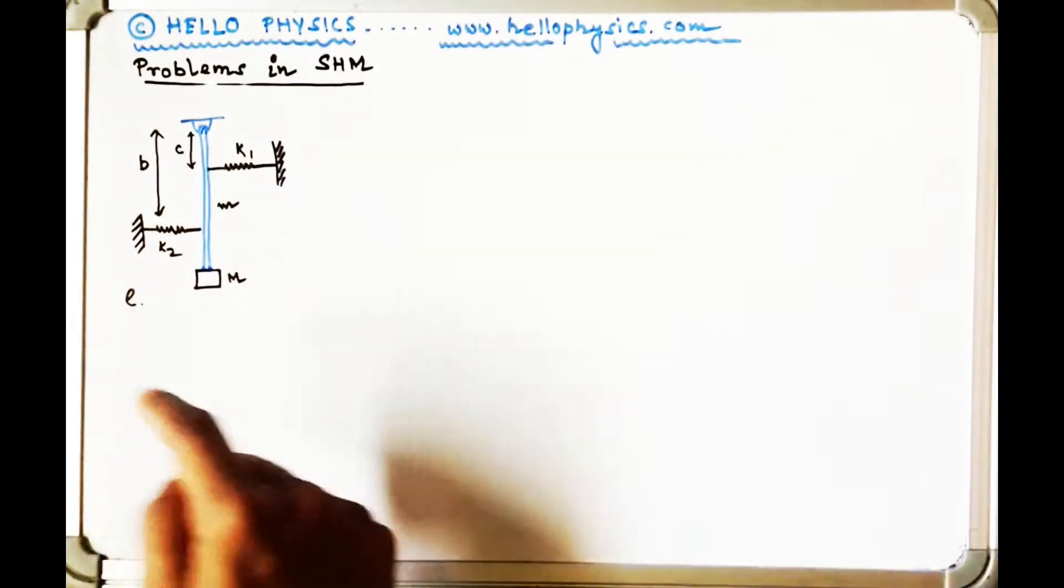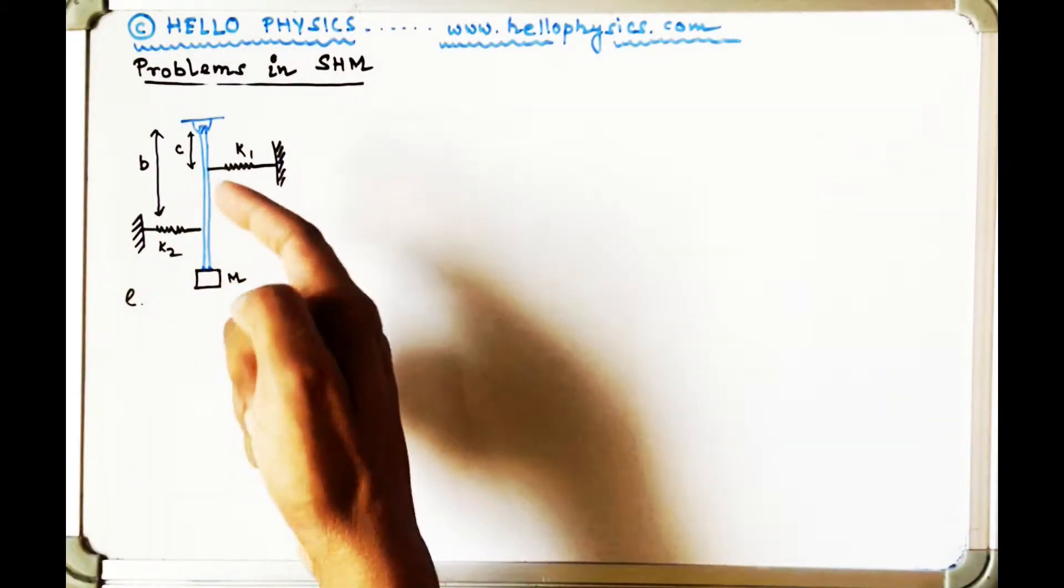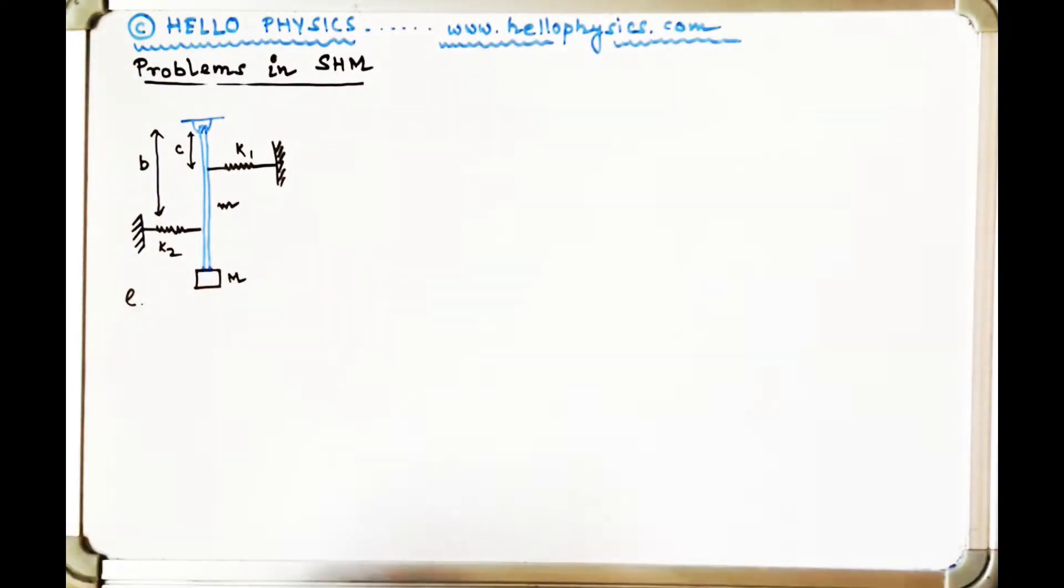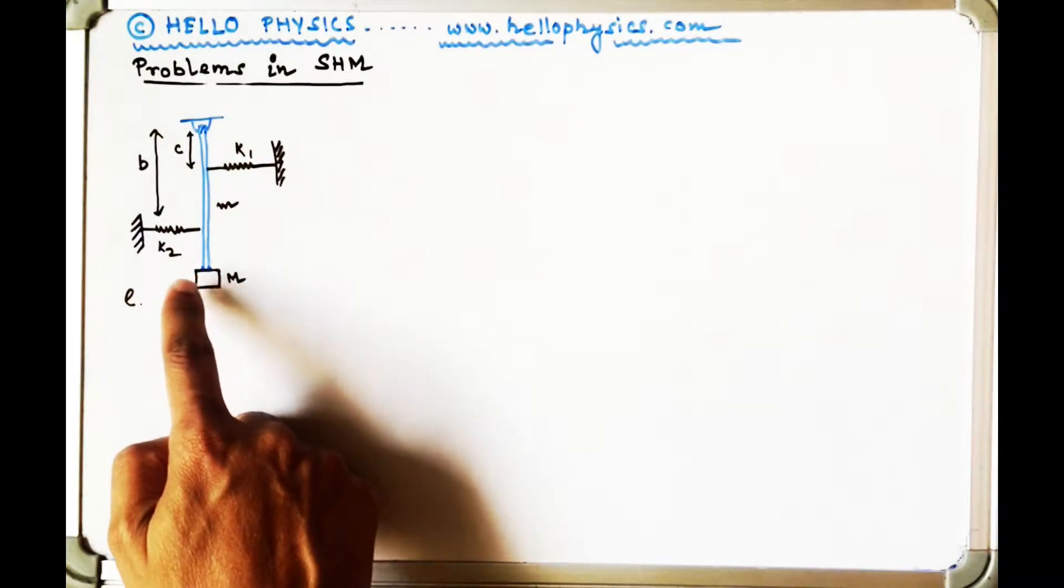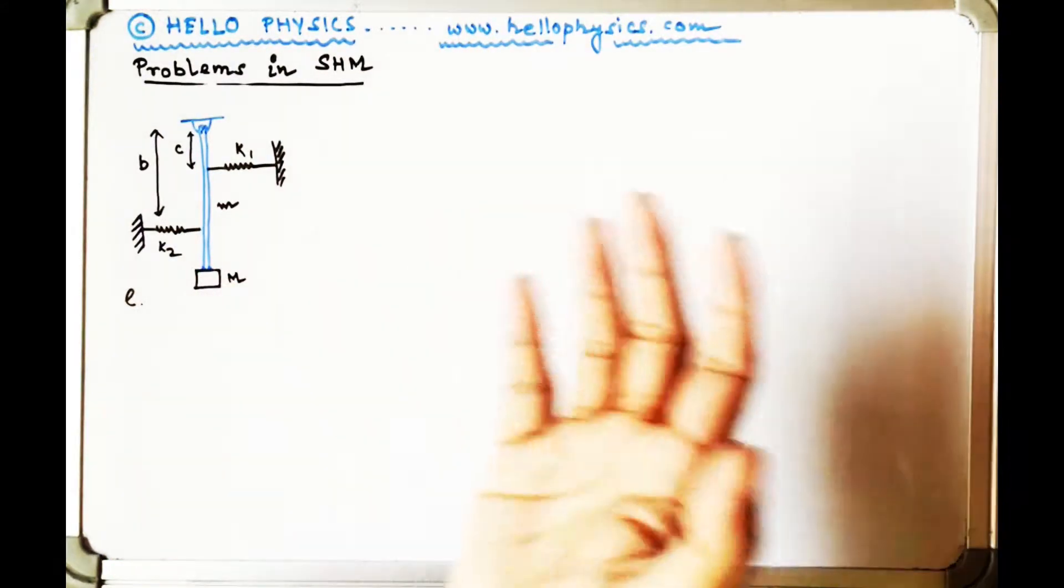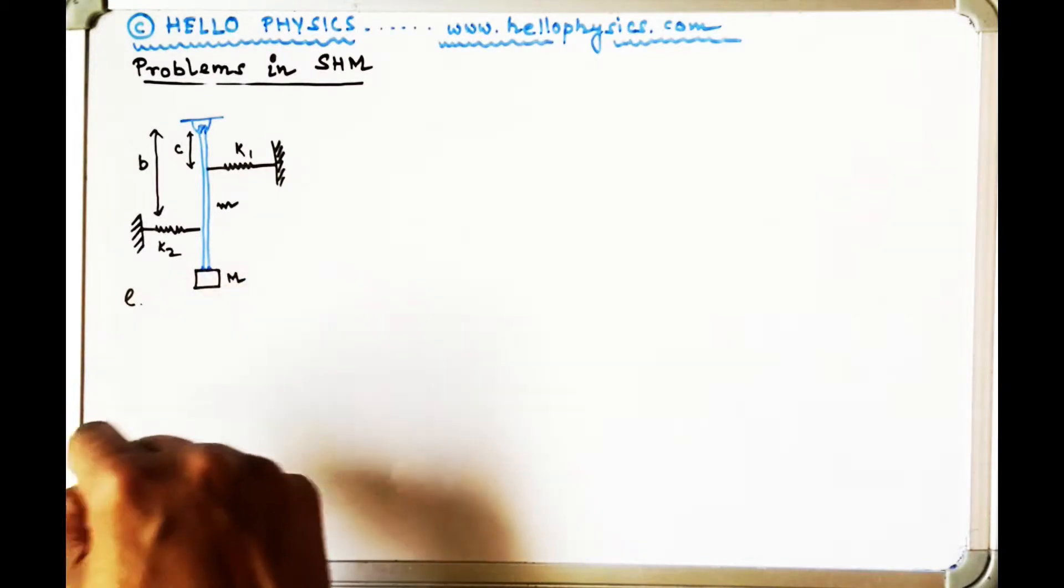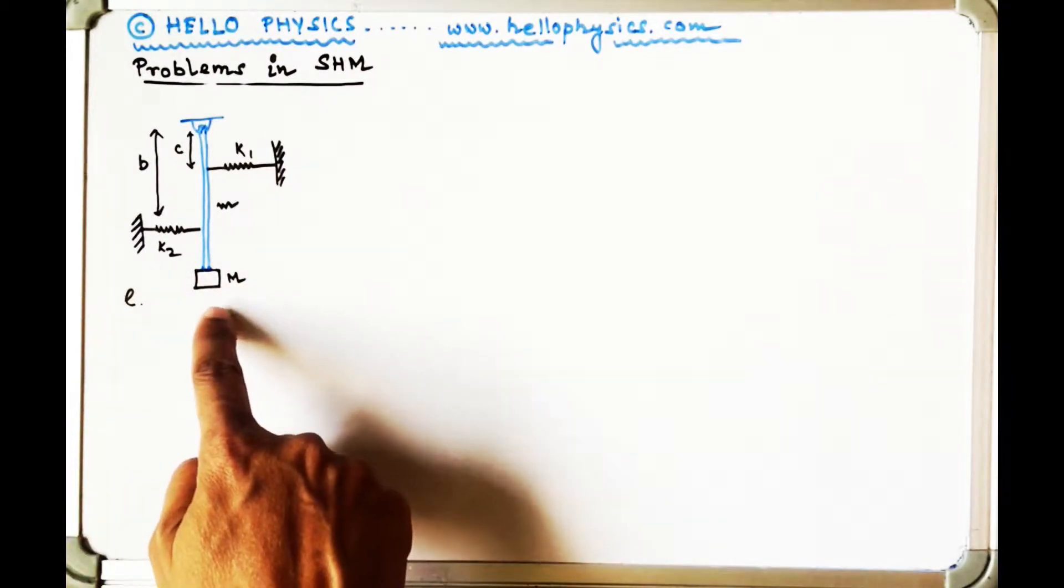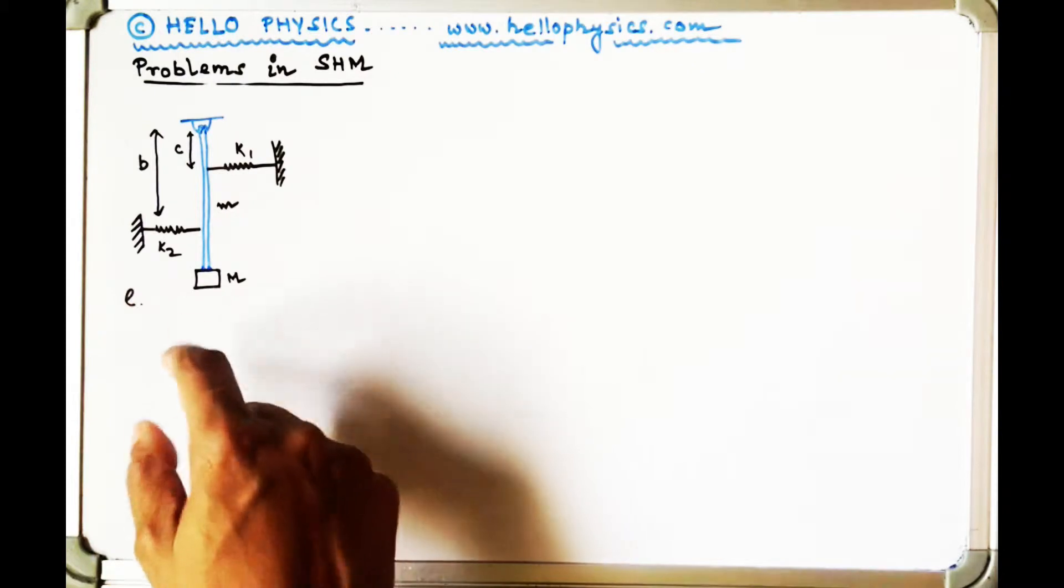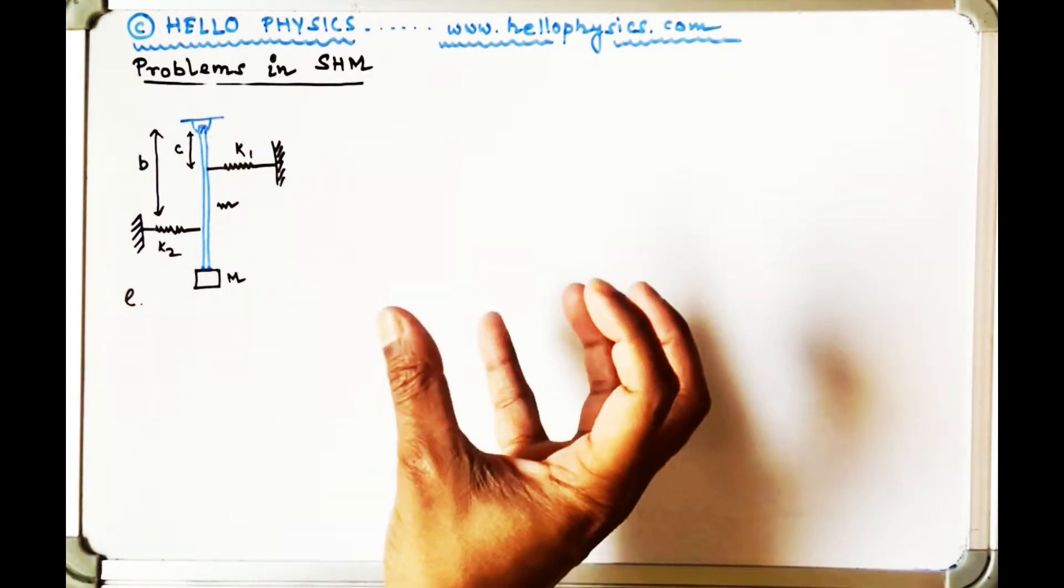The stick has a length of small l, its mass is small m, and there is another mass of capital M which is connected at one end of the stick. This black colored object is a mass which is connected, they are fixed.